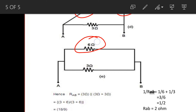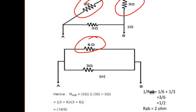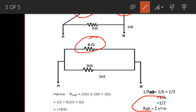These two combinations give 6 ohm. This 6 ohm resistor and the remaining 3 ohm resistor are in parallel connection, so 1/6 plus 1/6 gives 3/6, which is 1/2. Therefore, the final equivalent resistance between A and B is 2 ohm.